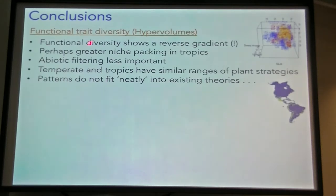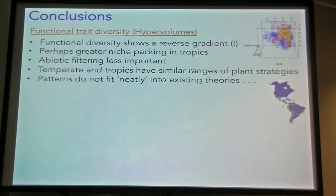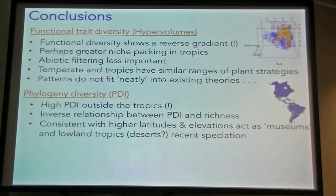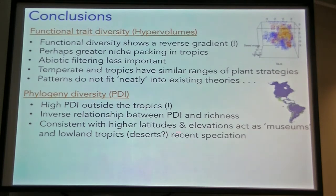For functional trait diversity, we found that actual functional diversity shows a reverse gradient — completely opposite to what we expected. Maybe there's greater niche packing within the tropics, but further study is needed. Abiotic filtering in general appears less important than expected. These patterns don't fit neatly to any of the existing theories; it may very well be that a combination is at work. For PDI, phylogenetic diversity is highest outside the tropics, with an inverse relationship between PDI and richness — consistent with higher latitudes and elevations acting more as museums, while the desert southwest may reflect recent speciation.